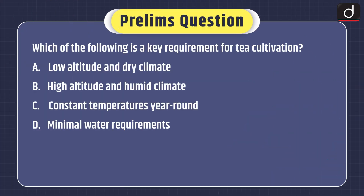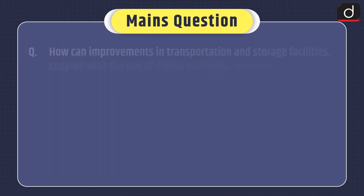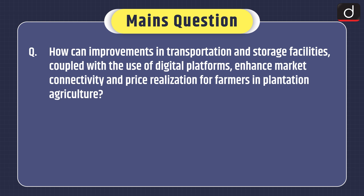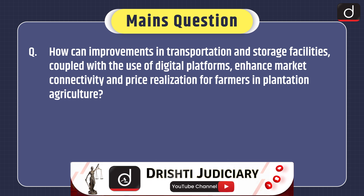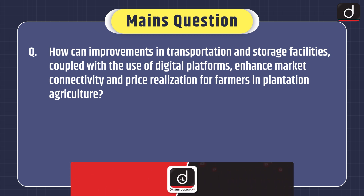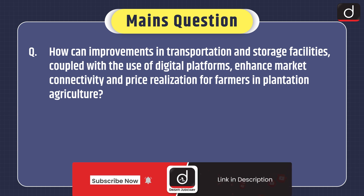Practice questions: Prelims-based question — Which of the following is a key requirement for tea cultivation? Options: Low altitude and dry climate; High altitude and humid climate; Constant temperatures year-round; or Minimal water requirements. Mains question — How can improvements in transportation and storage facilities, coupled with the use of digital platforms, enhance market connectivity and price realization for farmers in plantation agriculture? That's all for today — stay tuned for the next episode. Thanks for watching.